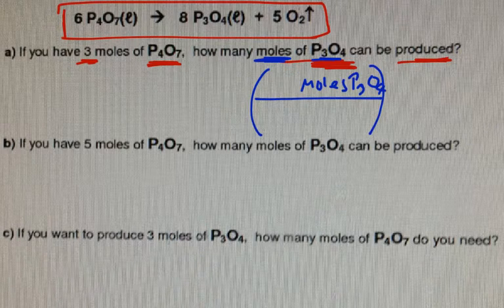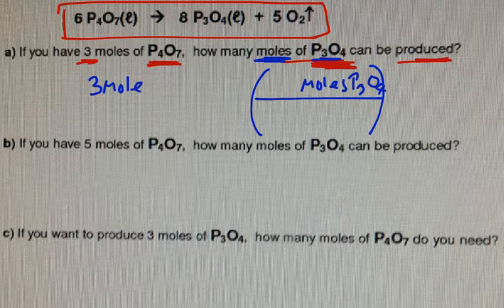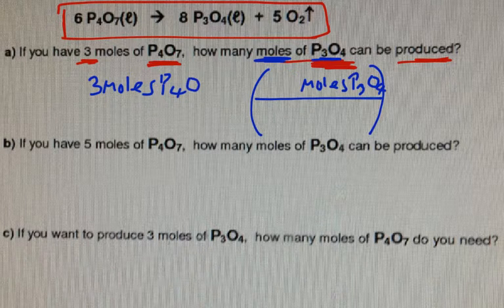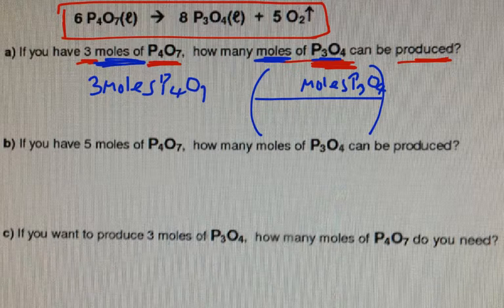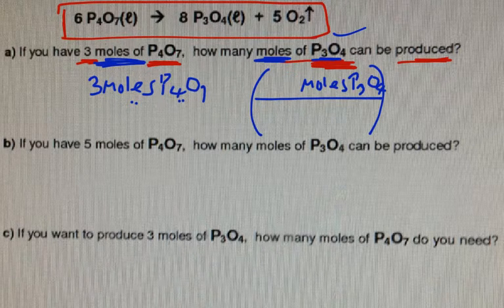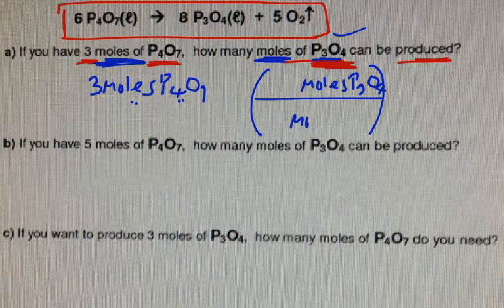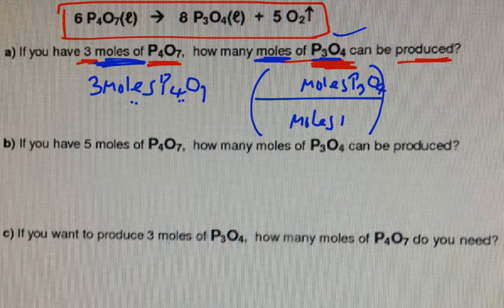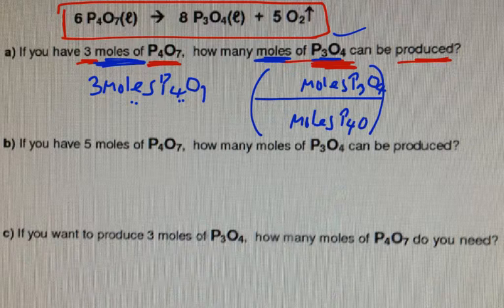Now, on the outside, what goes on the outside? Yes, you put three moles of P₄O₇ on the outside. Now, why do you put it on the outside? Because this is what they gave you that goes on the outside. Why does this go on top? Because that's what you're trying to find. Now, the next step is to get rid of this unit right here. So we put the same unit in the bottom. Moles of P₄O₇.